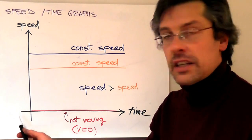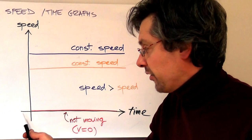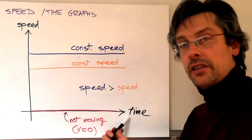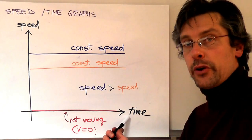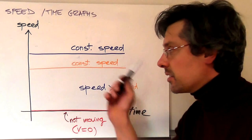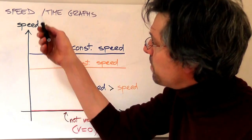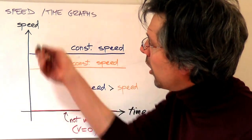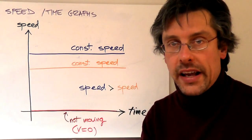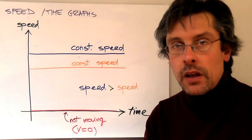First of all, in a speed-time graph, time will always be placed on the horizontal or x-axis, and speed on the vertical or y-axis.